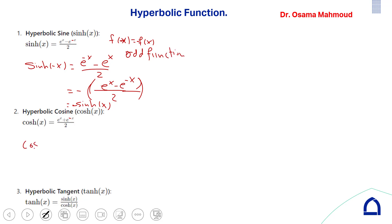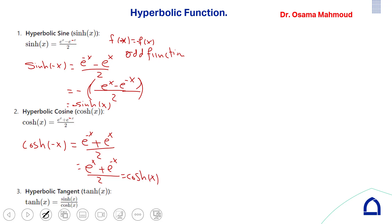For cosh(−x): e^(−x) + e^(−(−x)) / 2 = (e^(−x) + e^x) / 2, which equals cosh(x) since addition is commutative. When f(−x) = f(x), the function is called an even function. So sinh(x) is an odd function and cosh(x) is an even function.